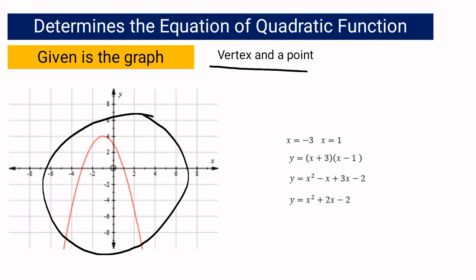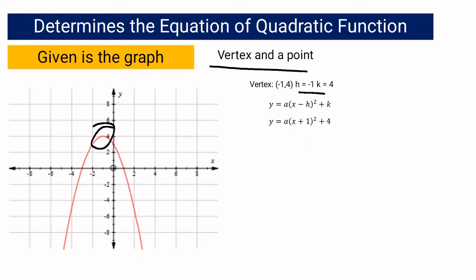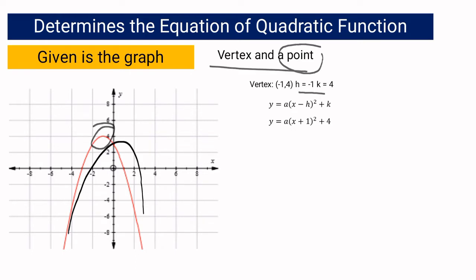Looking at our graph, the vertex is at negative 1, 4 — meaning h equals negative 1 and k equals 4. Since we have h and k, we write the function in the form y equals a times the quantity x minus h squared plus k. Substituting h and k: our h is negative 1, so we have x plus 1 squared, and our k is 4, so we have plus 4. But we do not yet have the value of a, so we need to find it using a point on the parabola.